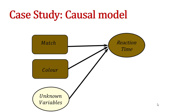This is the causal model of the new case study. We have the variables match and color as independent variables, or causal variables in the causal graph, and reaction time as the outcome. We also have unknown variables. Basically, what we are saying is that the nominal variables match and color affect reaction time, but there are also other unknown variables that affect the variability of reaction time.